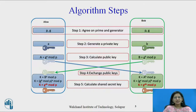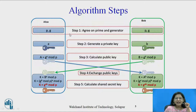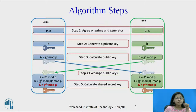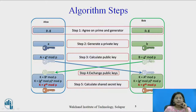Let us look at the algorithm step by step. In step one, both parties Alice and Bob agree on a prime number P and a generator G, which are common on both sides. In step two, Alice and Bob both generate their own private key, which is secret on their side — A and B are the private keys of Alice and Bob respectively. Now it is time to calculate the public key using the private key. Capital A indicates the public key of Alice, calculated using the formula G raised to A mod P. Similarly, Bob calculates public key B as G raised to B mod P.